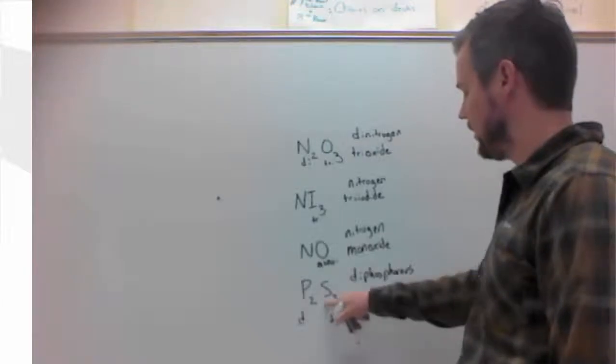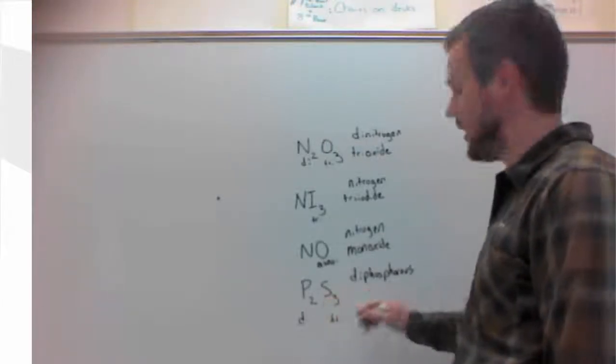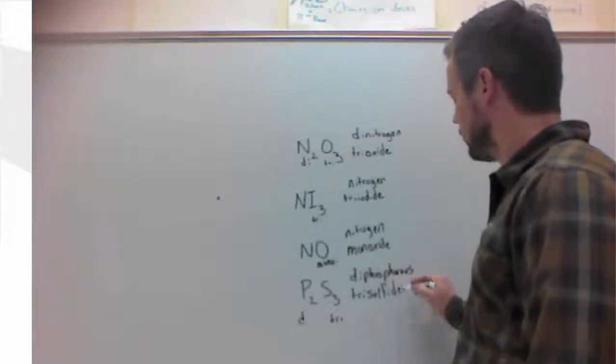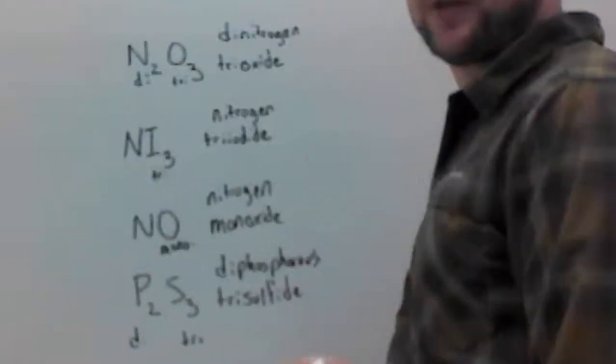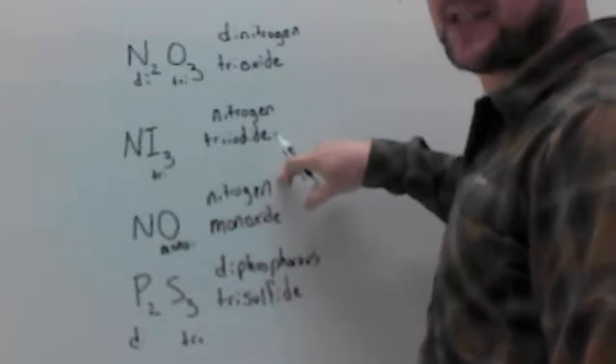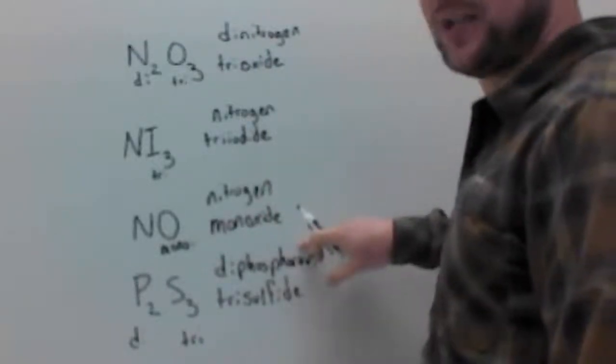Tri, and then sulfur turns to sulfide, trisulfide. So here we have dinitrogen trioxide, nitrogen triiodide, nitrogen monoxide, diphosphorus trisulfide.